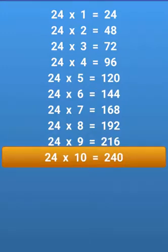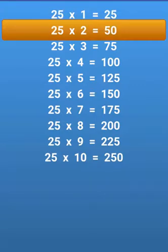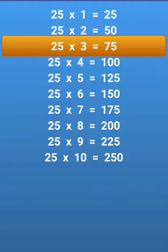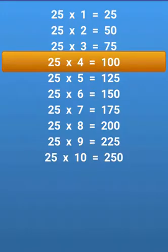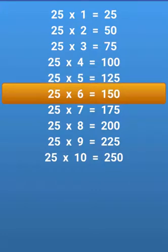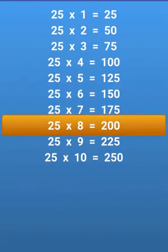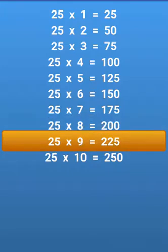24 times 10 equals 240, 25 times 5 equals 125, 25 times 6 equals 150, 25 times 7 equals 175, 25 times 8 equals 200, 25 times 9 equals 225.